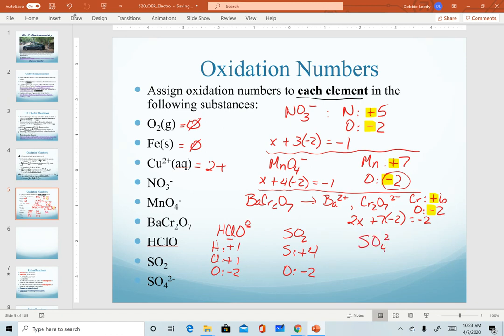And then our last example would be the sulfate ion, SO4 2-. Notice we have a charge listed here. Oxygen is again my known of a minus 2. In order to solve for sulfur, I need all of my oxidation numbers to add up to a minus 2. Therefore, sulfur is a plus 6.